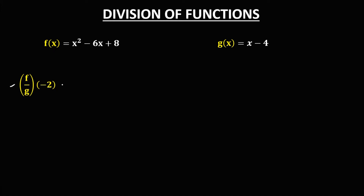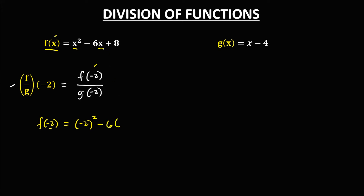For the next part, we write the function as f(negative 2) over g(negative 2). First, we find f(negative 2): substituting x equals negative 2 into f(x) gives negative 2 squared minus 6 times negative 2, plus 8. Simplifying: negative 2 squared is positive 4, and negative 6 times negative 2 is positive 12, plus 8. So f(negative 2) equals 4 plus 12 equals 16, and 16 plus 8 equals 24.